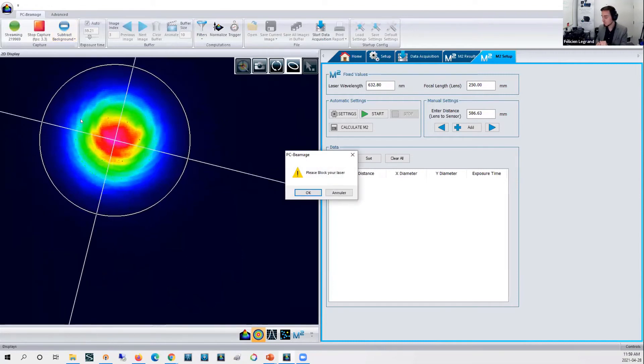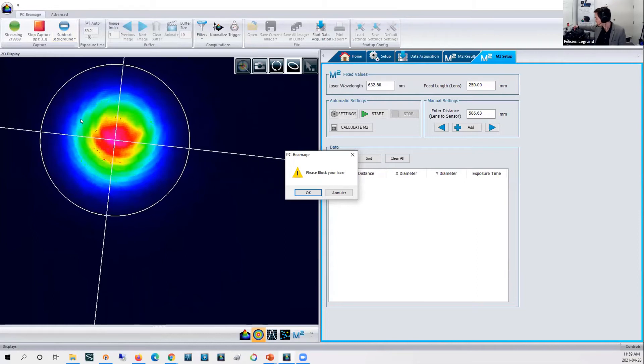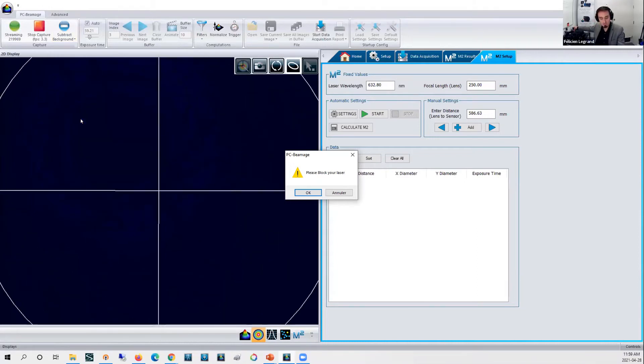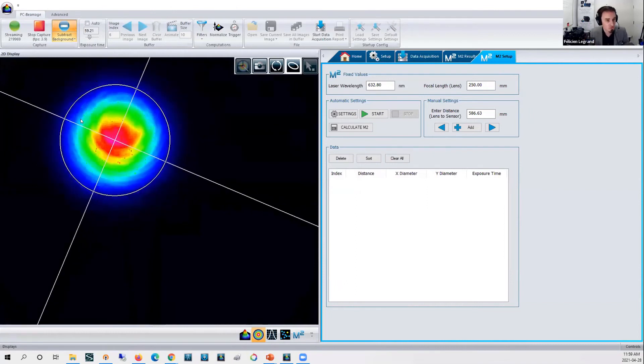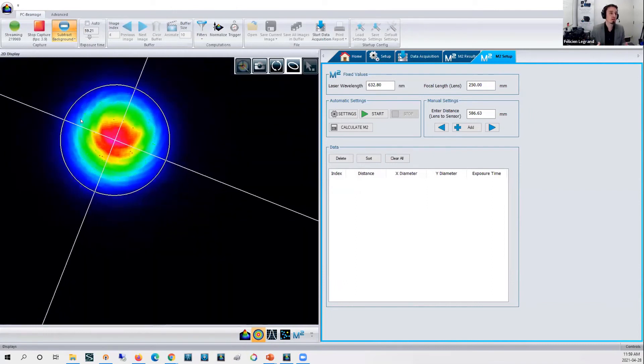It's really simple. Press that button, software will tell me that I need to block my laser beam, which I'm going to do with my card here. Blocking the beam, pressing okay. Software will acquire 10 frames, make an average of those 10 frames, and subtract the average to the actual signal. There you have a nice signal-to-noise ratio as maximum as possible and a good definition of the X and Y axis, which is all automatic.